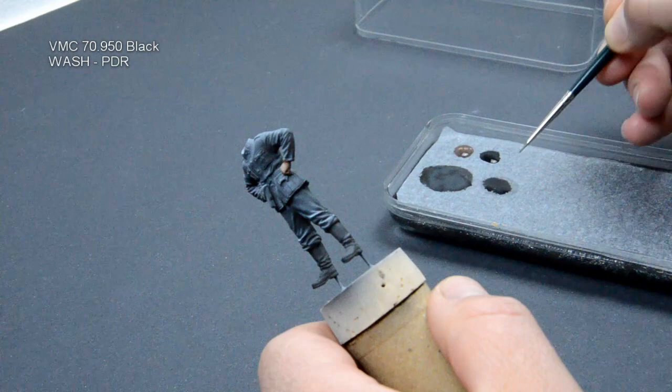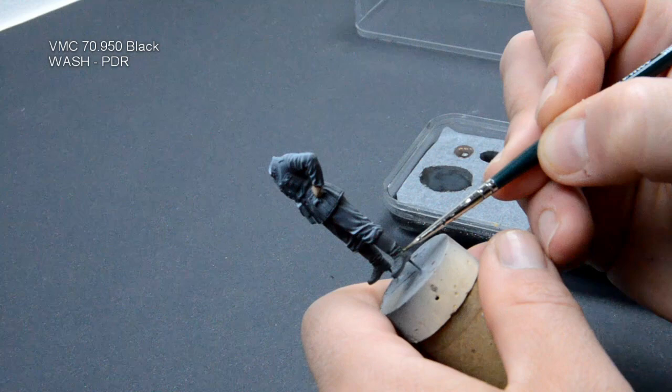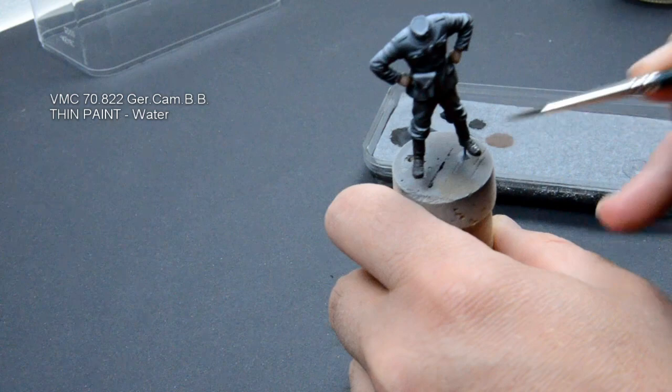For the shadows I used black. It was prepared as a wash with drying retarder. I applied this color to all the crevices. At the end I used some brown color for the most exposed parts.